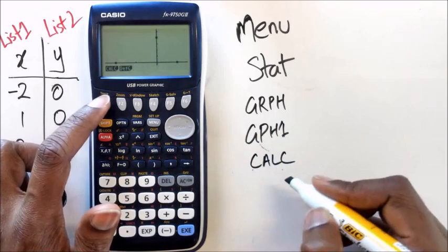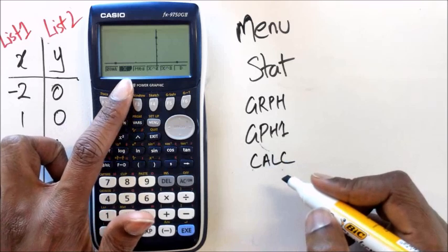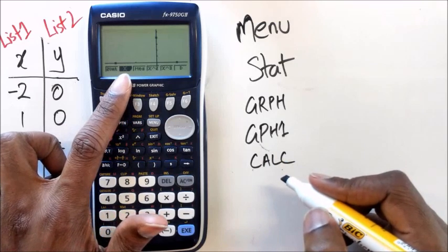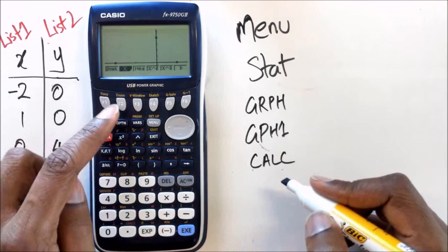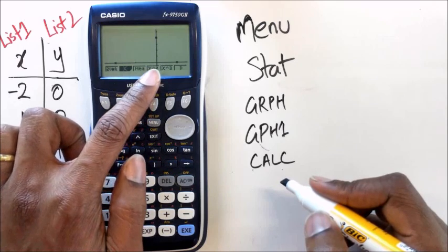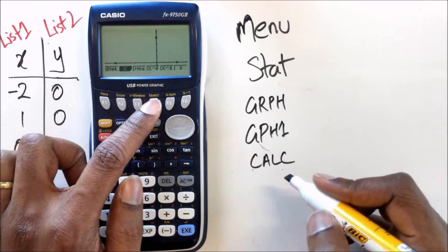Press calc. So at this point, remember that x was what we needed to do for linear. In this case we're actually working with a quadratic, so we need to go to x squared, which happens to be F4.